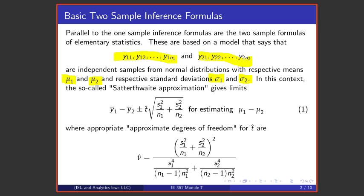Turning first to the means, there is this standard formula of elementary statistics that says take a difference in sample means and hedge that by some kind of approximate t value times the square root of the sum of the sample variances over the sample sizes. That square root is a standard error for the difference in y bar 1 and y bar 2. The usual recommendation for making that t-multiple is to use an approximate degrees of freedom based on what's known as a Satterthwaite approximation.